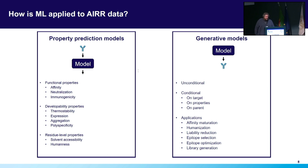There are lots of applications of generative models, and this is an area of particular interest in research at the moment. We've seen applications in affinity maturation against particular targets, in humanizing sequences — especially humanizing VHH and camelid sequences — in liability reduction during therapeutics development, and various other parts of the discovery and optimization process.